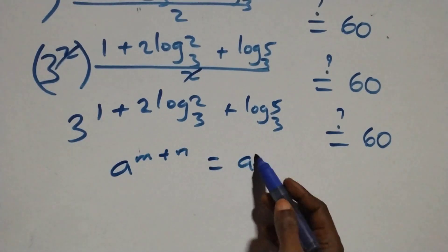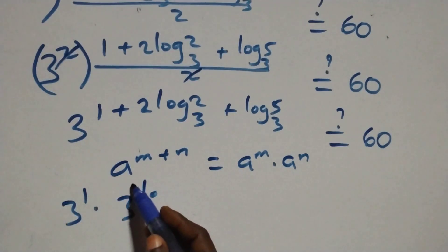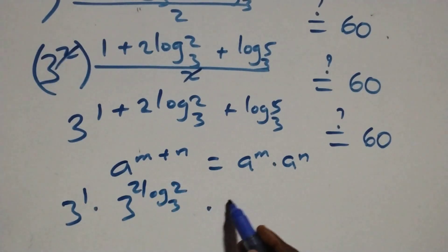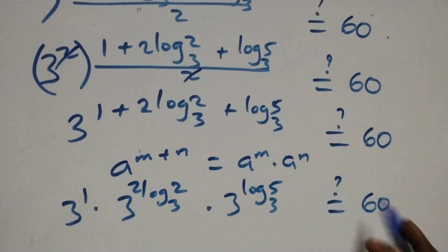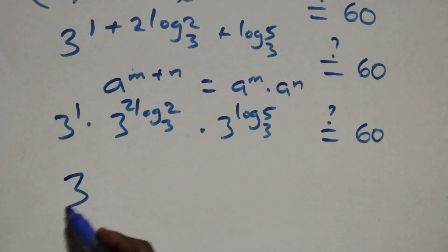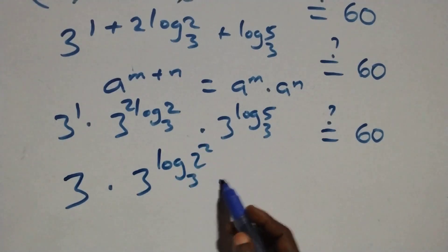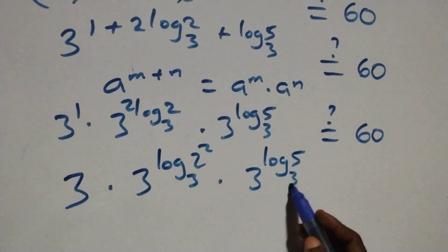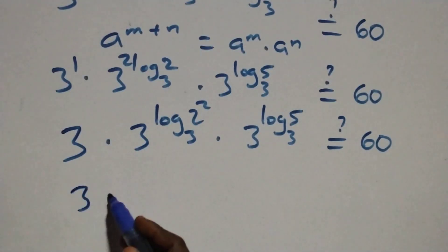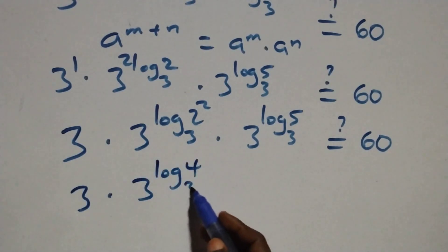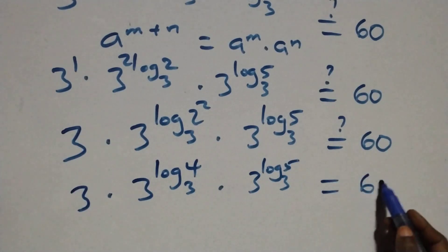Applying the law of indices — a raised to the power (n + n) is the same as a^n times a^n — we have 3 raised to power 1, times 3 raised to power 2·log_3(2), times 3 raised to power log_3(5). We rewrite 2·log_3(2) as log_3(2²), so we have 3 times 3 raised to power log_3(4), times 3 raised to power log_3(5). Is this equal to 60?